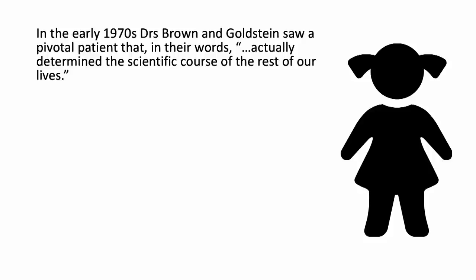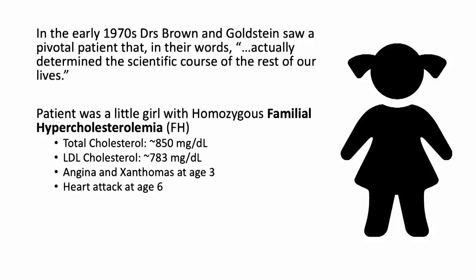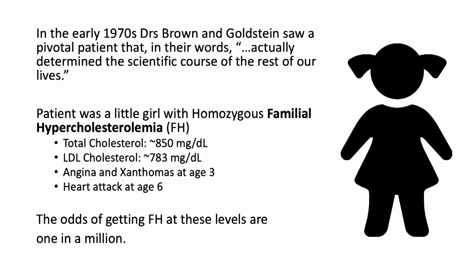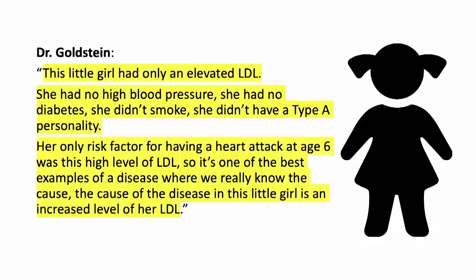In the early 1970s, doctors Brown and Goldstein saw a pivotal patient that, in their words, determined the scientific course of the rest of their lives. The patient was a little girl with homozygous familial hypercholesterolemia. She had developed angina and xanthomas at age three, and had her first heart attack at age six. In the words of Dr. Goldstein, this little girl had only an elevated LDL — no high blood pressure, no diabetes, didn't smoke, didn't have a type A personality. Her only risk factor for having a heart attack at age six was this high level of LDL. So it's one of the best examples of a disease where we really know the cause: the cause in this little girl is her increased level of LDL.